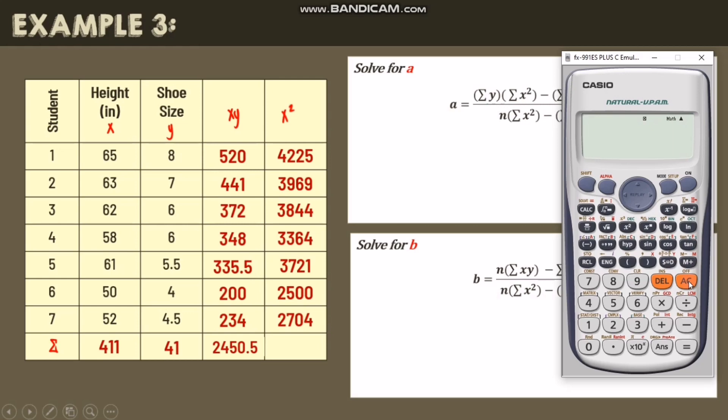Next is the summation of x squared. 4,225 plus 3,969 plus 3,844, 3,364 plus 3,721 plus 2,500 and plus 2,704. So the answer is 24,327.